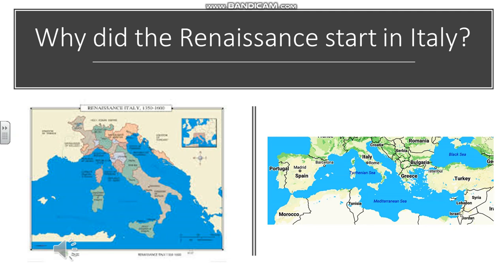If you look at the map on the left, there are a number of Italian city-states. At this time they were becoming increasingly prosperous, but also they were rivals. We'll talk about that in the next couple of slides and how that impacted developments in the Renaissance.